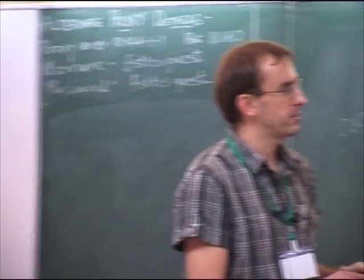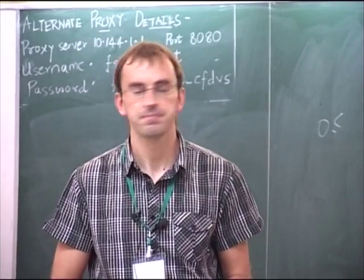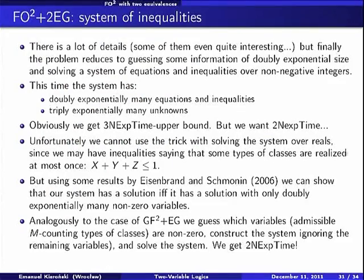We finally finish in doubly exponential non-deterministic time. A lower bound can also be shown — it was shown by Ian Pratt-Hartmann using a similar counting trick to construct a grid of doubly exponential size. So the problem is 2NEXPTIME-complete.